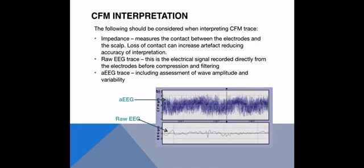Now the CFM is on, we need to think about how to interpret the trace. The first thing to consider is impedance, which tells us how reliable the trace is by measuring the contact between the electrodes and the scalp. Loss of contact increases the risk of artefact and reduces the reliability of what we're seeing as a true interpretation of brain activity.